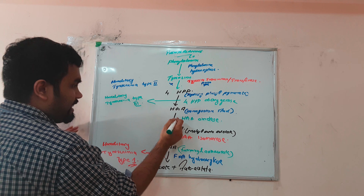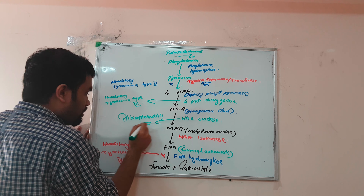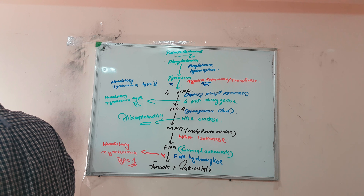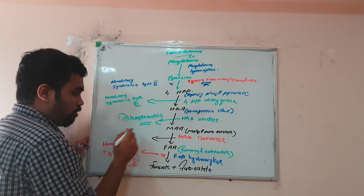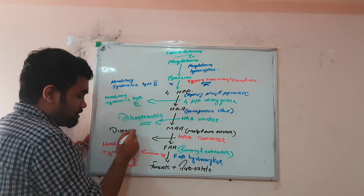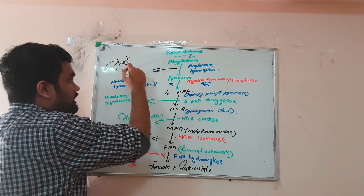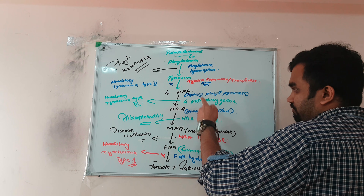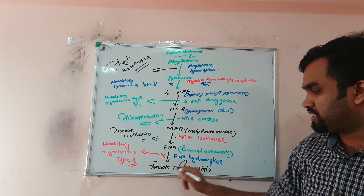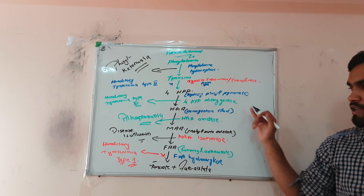If HGA oxidase is absent, we get alkaptonuria. For MAA isomerase deficiency, the associated disease is unknown. And phenylalanine hydroxylase deficiency causes phenylketonuria (PKU). In every competitive exam, questions come from this flowchart — enzyme deficiency and disease: type 1 is FAA hydroxylase, type 2 is tyrosine aminotransferase, type 3 is 4-HPP dioxygenase.